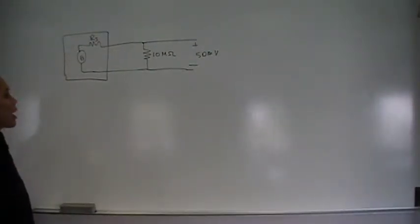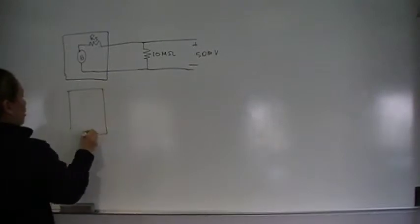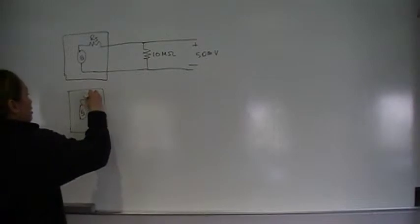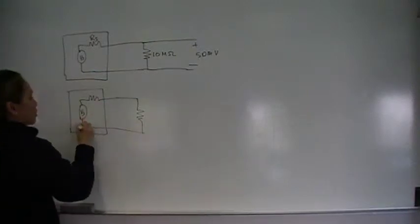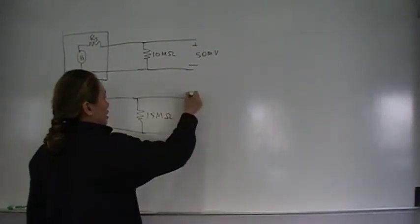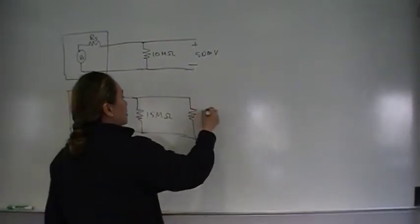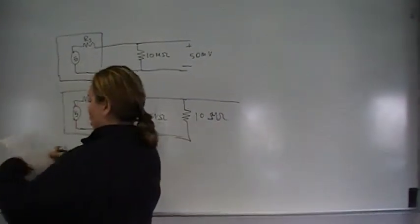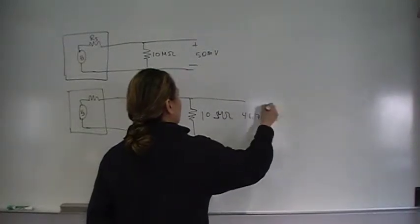The second piece of information is that we take the voltage source with its unknown voltage and internal resistance, then connect it to a 15 megaohm resistor. That 15 megaohm resistor is connected in parallel with the voltmeter, which has its own 10 megaohms of resistance. When we do that, we get a reading of 48.75 millivolts.